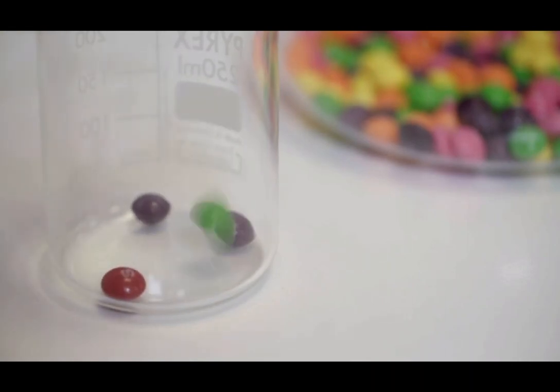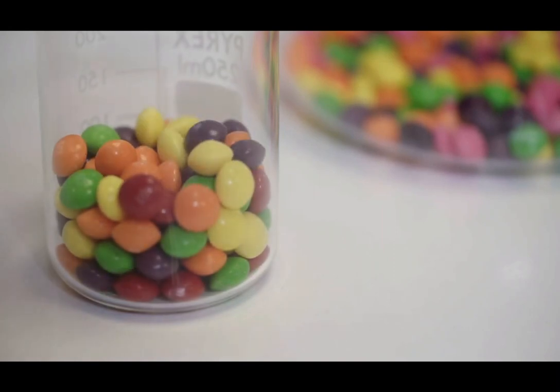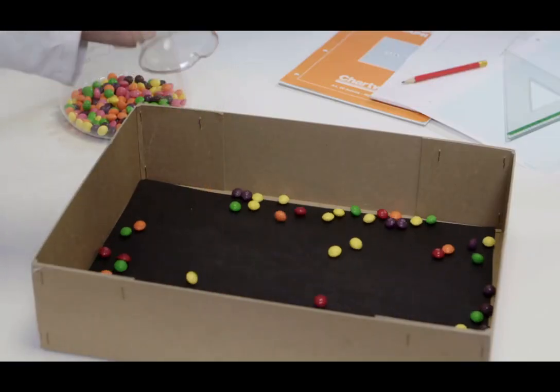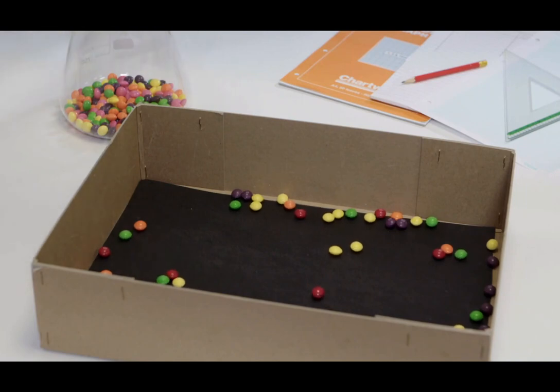The experiment begins by counting out a hundred sweets into a cup or beaker. Next, the sweets are poured into the box. The sweets will land randomly across the bottom of the box.